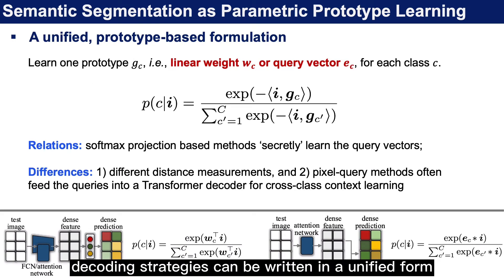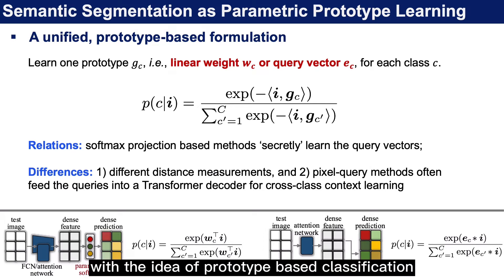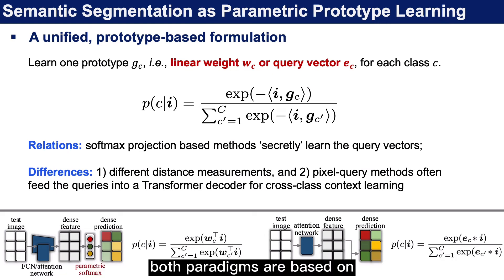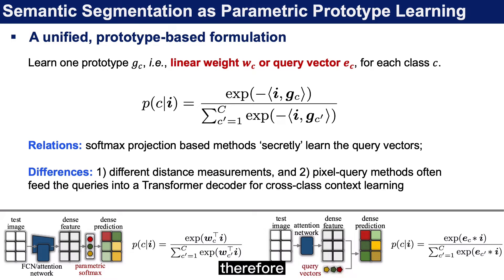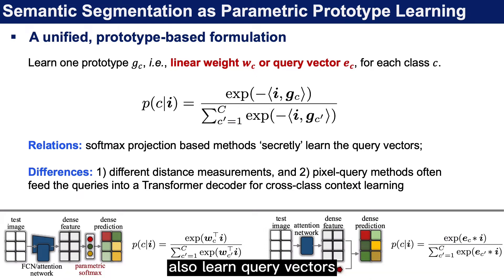With the ideal prototype-based classification and this unified formulation, we can answer the question. Both paradigms are based on parametric prototype learning, in the sense that they learn one prototype for each class. Therefore, we can regard that softmax projection-based methods also learn query vectors in a hidden manner.